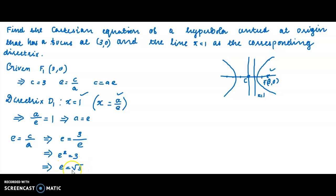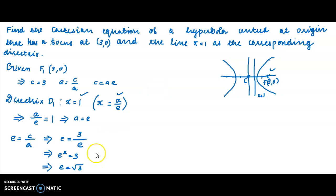This is the eccentricity of the hyperbola: e = √3. Now we can write the equation using the focus-directrix property. The standard form of the hyperbola equation is x²/a² + y²/b² = 1, where a/e = 1, giving a = √3, and we can derive the equation from the focus-directrix definition.